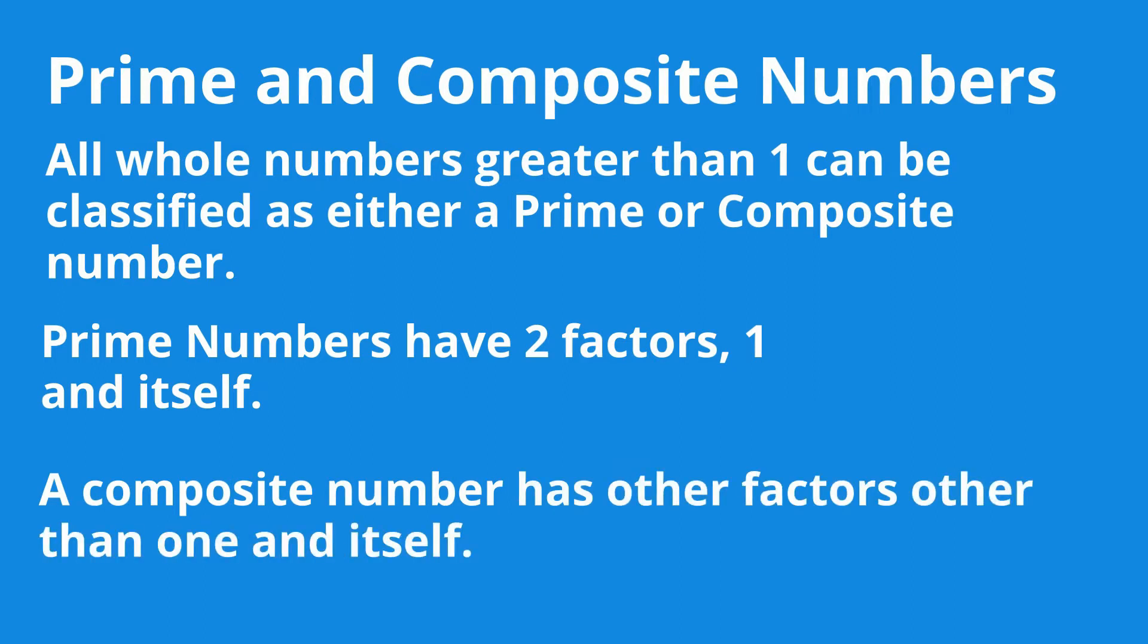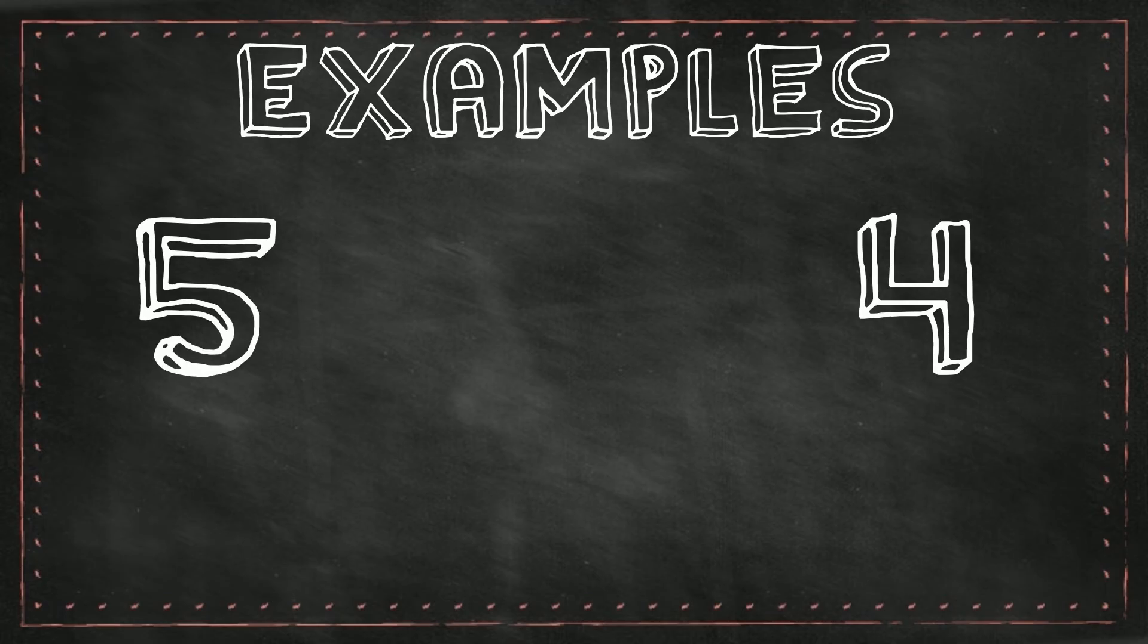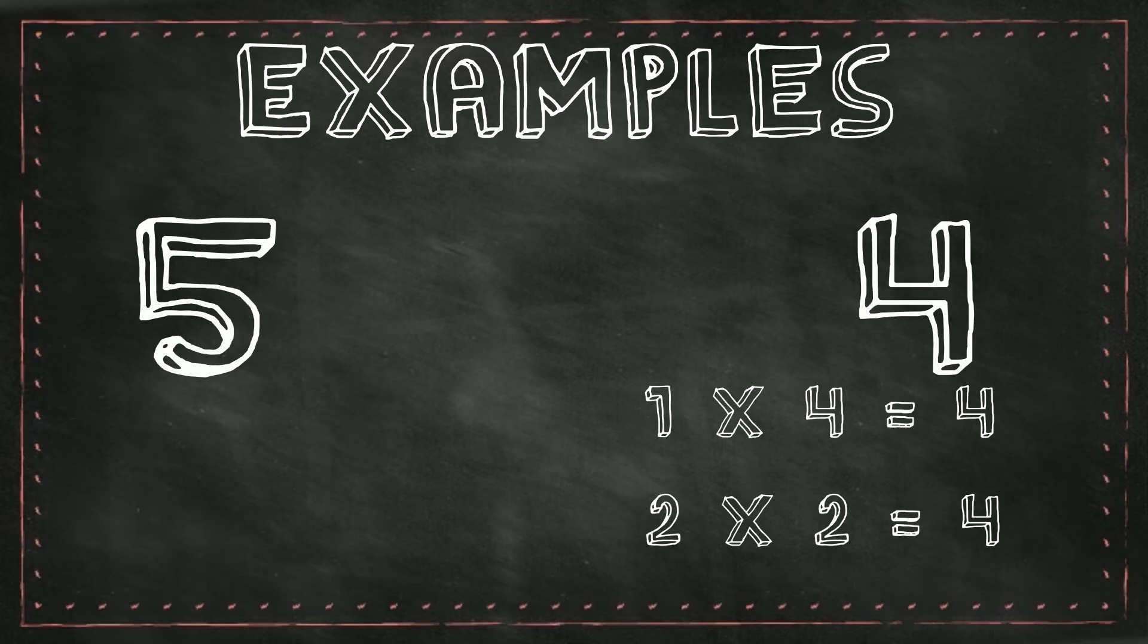Let's take a look at some examples. Looking at 4 and 5, 4 is divisible by 1 and 4 is also divisible by 2. So 4 is a composite number.